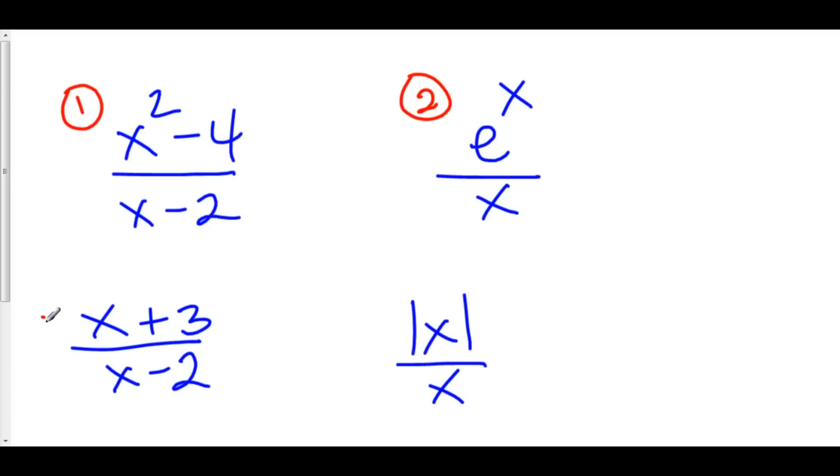Let's take a look at our third function, x plus three over x minus two. At x equals two, we're dividing by zero. However, x minus two does not cancel out with anything on top, which means that this is also going to be a vertical asymptote. If it did cancel out, like in number one, that would be a hole.